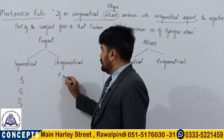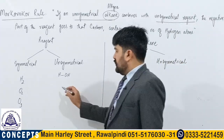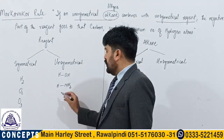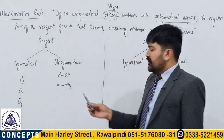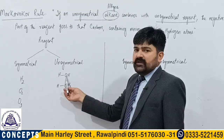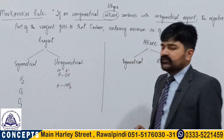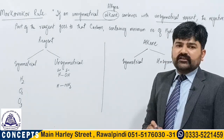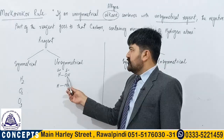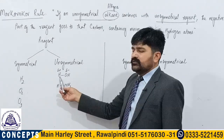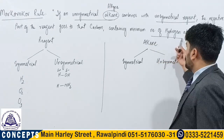Unsymmetrical reagent means a chemical like water (H2O) or ammonia (NH3). In a water molecule, oxygen is the main electronegative center, so it bears a partial negative charge. Likewise, hydrogen bears a partial positive charge. So in an asymmetrical or unsymmetrical reagent there is a positive as well as a negative center.